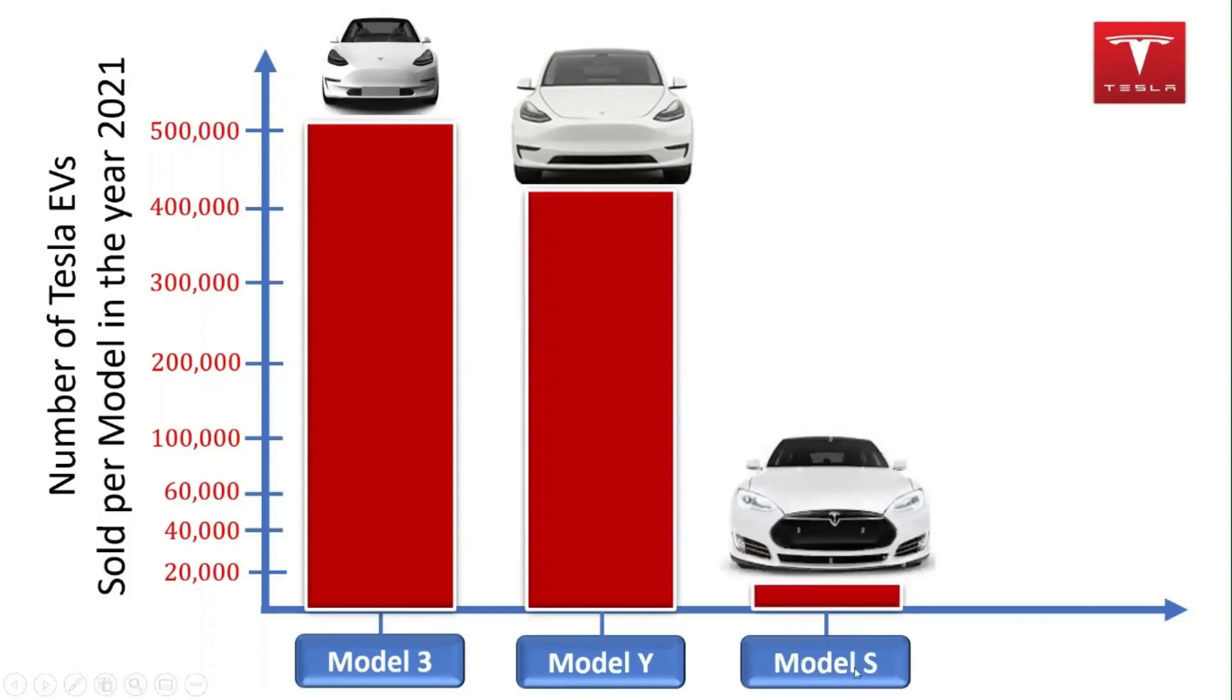Tesla's Model S is known for its longer range, faster acceleration and dazzling speed, and the credit goes to the power electronics and the battery systems.